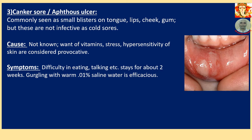Number 3: Canker Sore or Aphthous Ulcer. Commonly seen as small blisters on the tongue — I have shown an aphthous ulcer image on the right-hand side. They appear on tongue, lips, cheek, and gum, but these are not infective as cold sores are. Cause is not known; want of vitamins, stress, and hypersensitivity of skin are considered provocative. Symptoms include difficulty in eating and talking. Stays for about 2 weeks. Gargling with warm 0.1% saline water is efficacious.